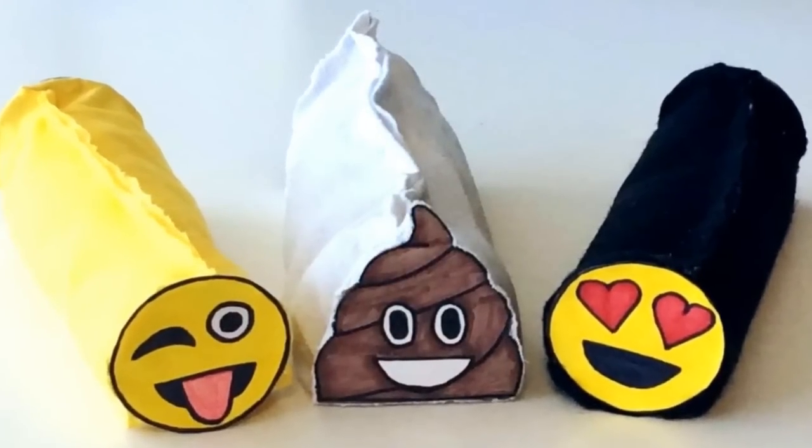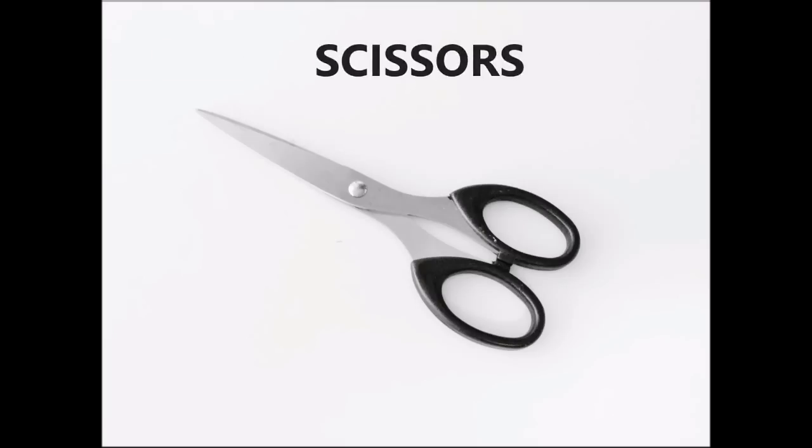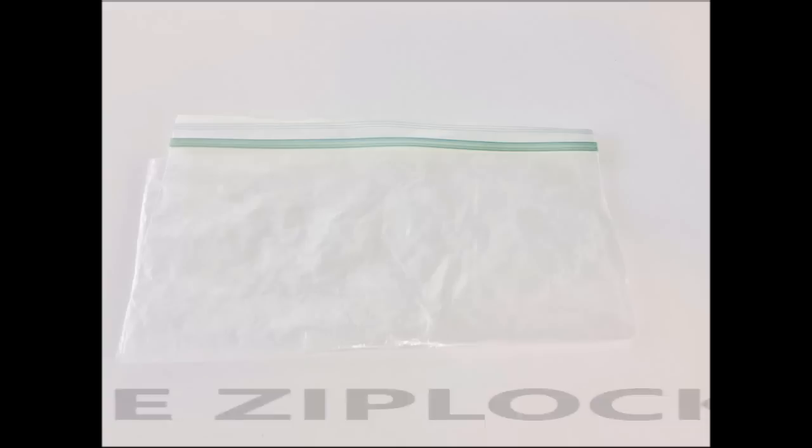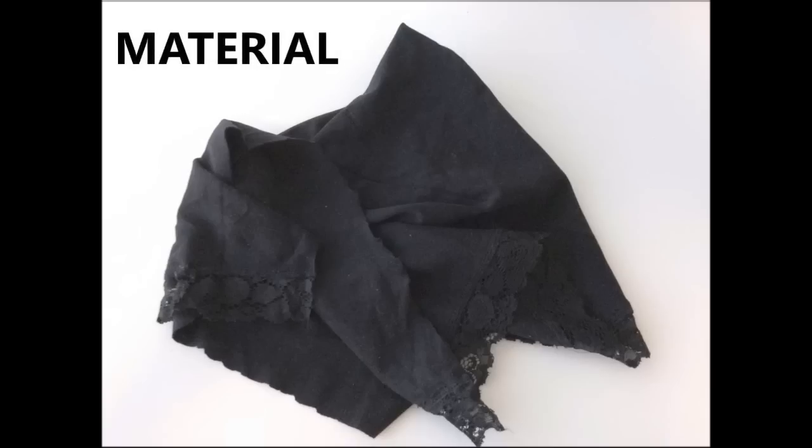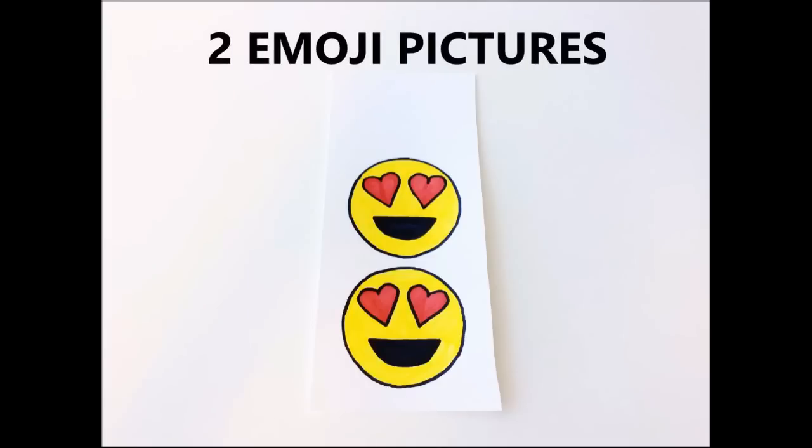Things you will need to make your emoji pencil case are a pencil or pen, some scissors, a glue gun, a large zip lock bag, some material, cardboard, and two emoji pictures that are either printed or just drawn yourself.